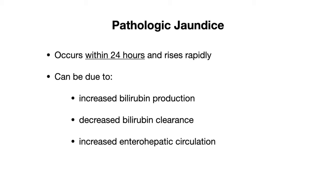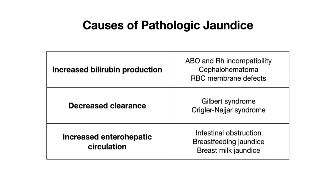Increased bilirubin production can include ABO and Rh incompatibility leading to hemolytic disease of the newborn, as well as a cephalohematoma. This is when blood accumulates under the scalp as a result of trauma from the birthing process, leading to breakdown of RBCs, heme formation, and conversion to bilirubin.